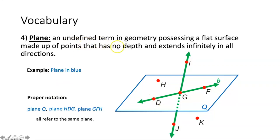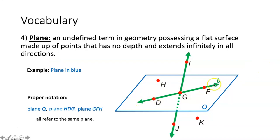A plane is an undefined term in geometry possessing a flat surface made up of points that has no depth and extends indefinitely in all directions. In our example, this blue part would be our plane and everything inside would be inside our plane. A plane has no depth, meaning that its thickness is the same as a point because a point just describes a location. So we just assume when you see a plane that it extends indefinitely in all directions.